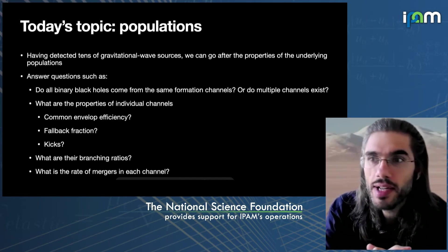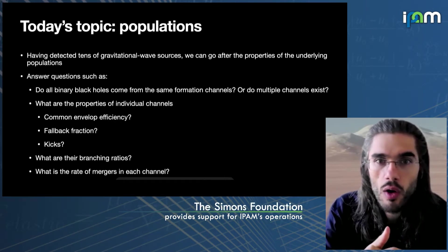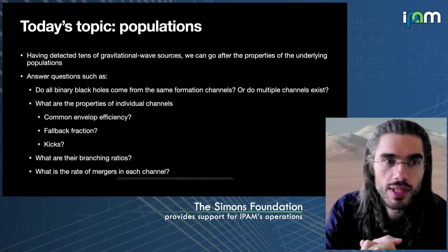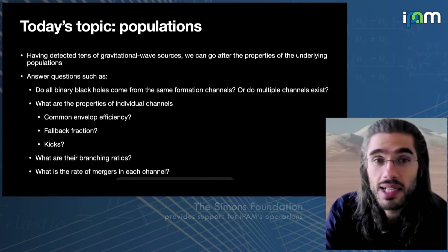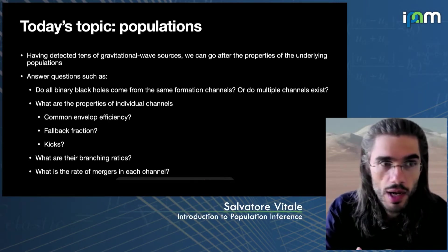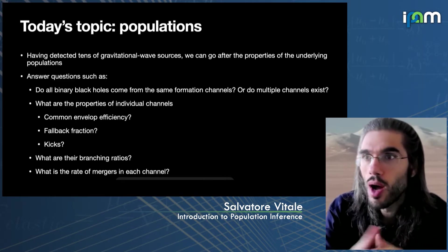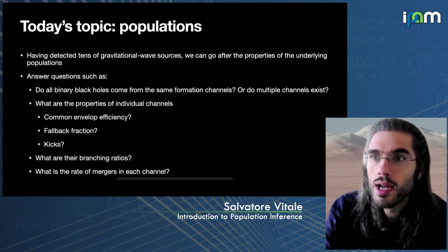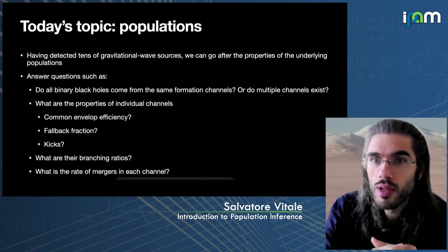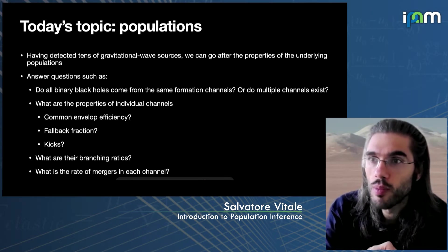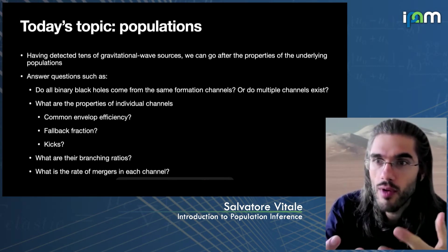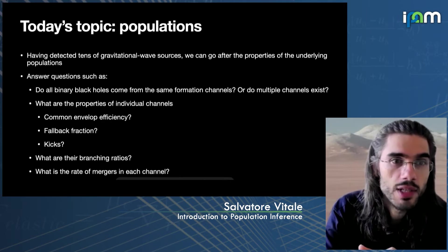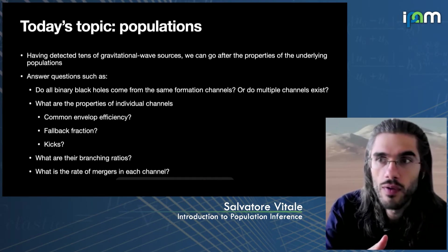The idea here is pretty straightforward. As of a few days ago, the ground-based detectors have reported around 90 compact binary coalescences. As we build up a large set of sources, we can try not only to characterize each of them individually, but also go after the properties of the underlying astrophysical population or populations that these sources are representing. The goal, ultimately, is to answer questions which pertain to the astrophysics of compact binaries.